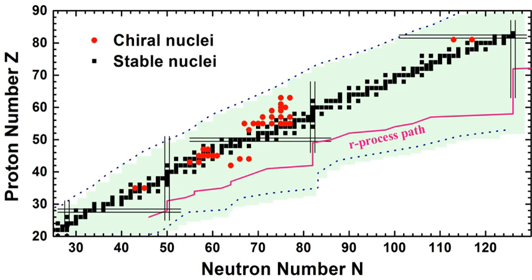Noteworthy is that the R-process is responsible for our natural cohort of radioactive elements, such as uranium and thorium, as well as the most neutron-rich isotopes of each heavy element.